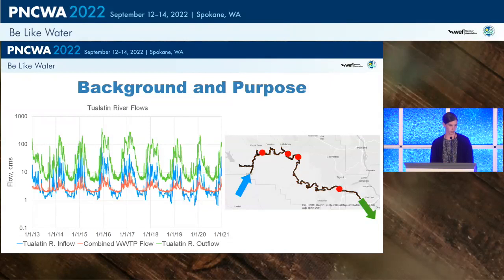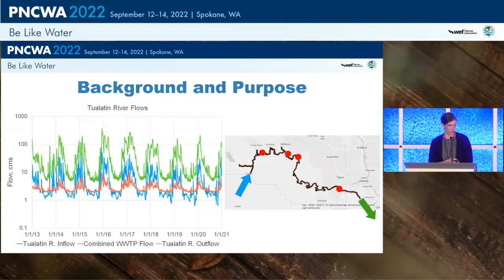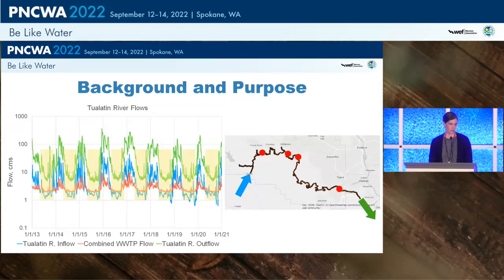The graph shows the time series of flows in the system. The blue shows the Tualatin River inflow into our model domain, the green is the combined Tualatin River outflow, and the pink is the combined wastewater treatment plant flow — the sum of all four treatment plants. What's interesting is that particularly in the summer, the combined wastewater treatment plant flow often exceeds the Tualatin River input into the system, and it's about 30% of the overall flow leaving our model domain. There's particular interest in looking at how different discharge scenarios might impact water quality downstream.